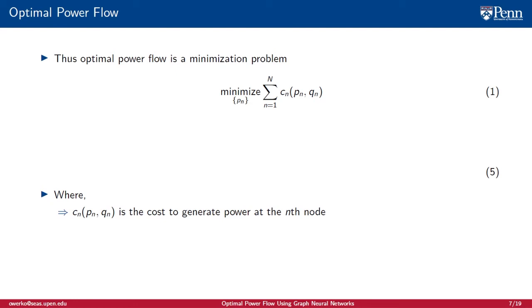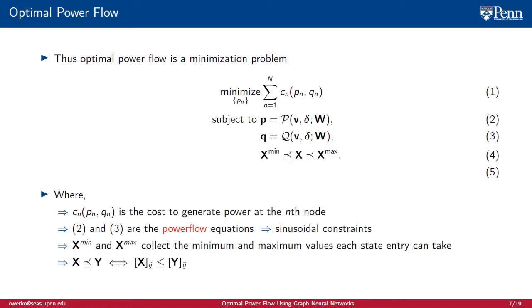In optimal power flow, we want to minimize the total cost to generate power at each node. Our solution must be consistent with the physics of the grid. In other words, it must satisfy the power flow equations. These are non-linear and are the main reason behind the difficulty of the problem. Additionally, there are bounds in the values each state element can take. For example, a specific node might only be able to produce below 400 megawatts of power.